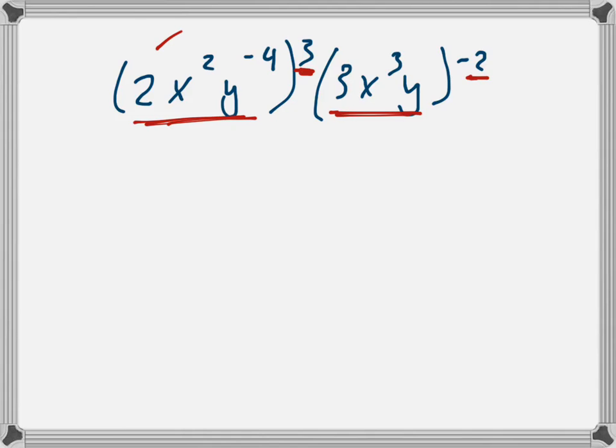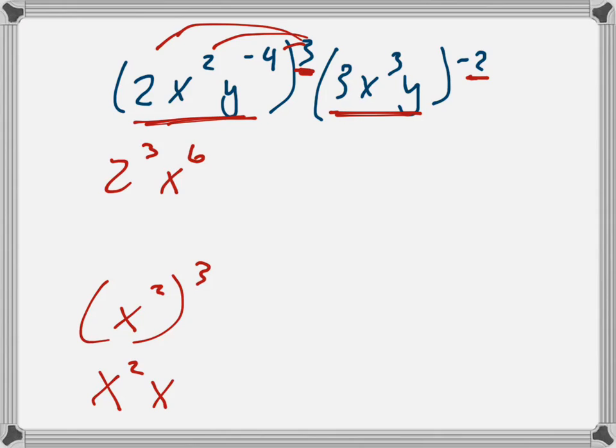So let's distribute it into all three of those. So that's 2 cubed, x. What's x squared cubed? x to the fifth? Nope. x to the sixth. Because x squared cubed means x squared times x squared times x squared, which is x to the sixth. So think of it like that.